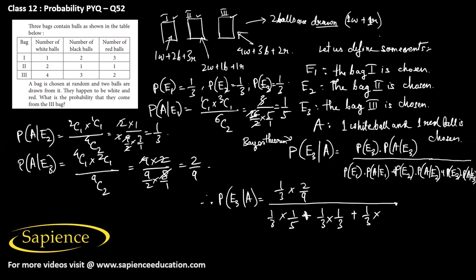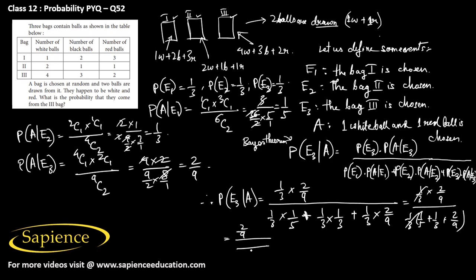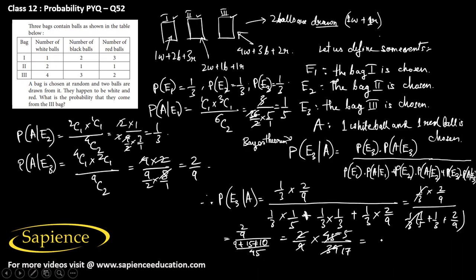The factor 1/3 cancels throughout. So we have 2/9 divided by (1/5 + 1/3 + 2/9). Taking LCM of 45: this becomes 2/9 divided by (9/45 + 15/45 + 10/45) = 2/9 divided by 34/45 = (2/9)×(45/34) = 10/34 = 5/17. So the final answer is 5/17.